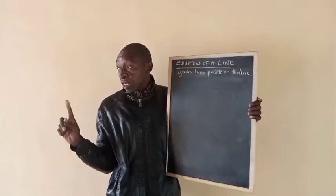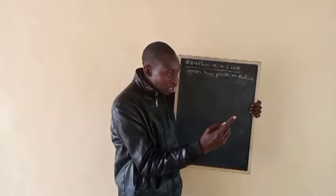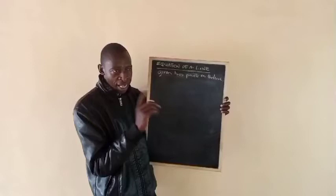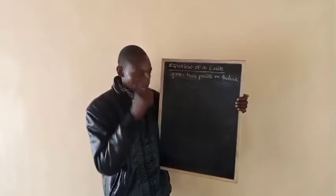We were given one point and the gradient. But here we will do something different. We are given the equation of a line, we are given two points on the line. We are given two points on the line and no gradient.